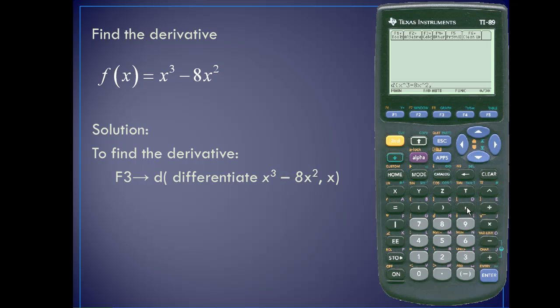I'll insert a comma, I'll insert the variable of my expression, which is x, I'll close off the differentiate function, I'll press enter, and it gives us the derivative as 3x square minus 16x.